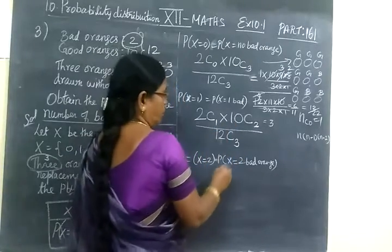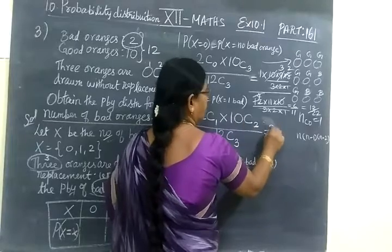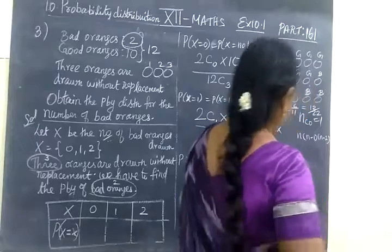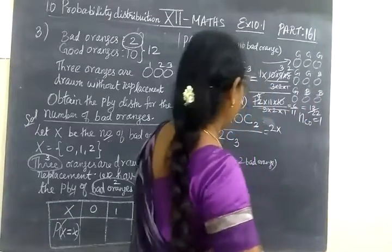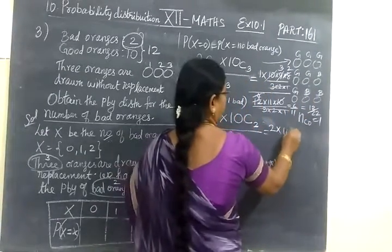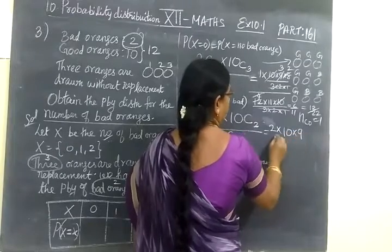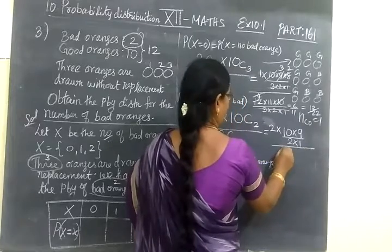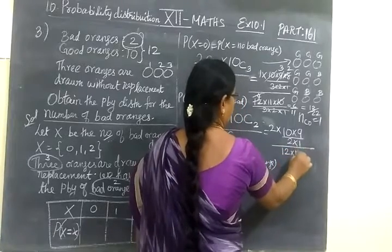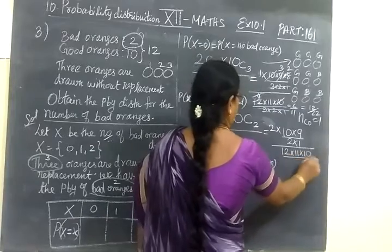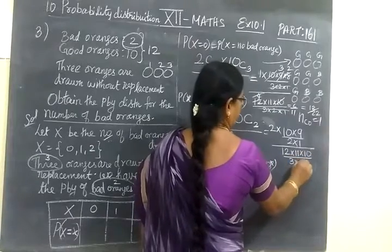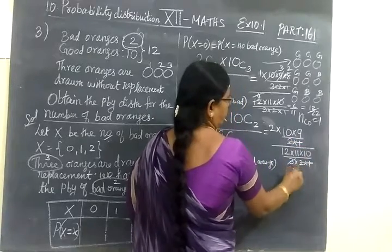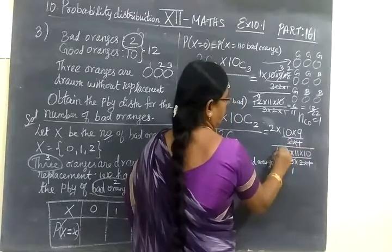So now we expand this. 2 C 1 is nothing but 2. 10 C 2 is nothing but 10 into 9 by 2 into 1. The whole by 12 C 3, 12 into 11 into 10 by 3 into 2 into 1. Here 2 into 1, then 3 1 times, here 4 times.